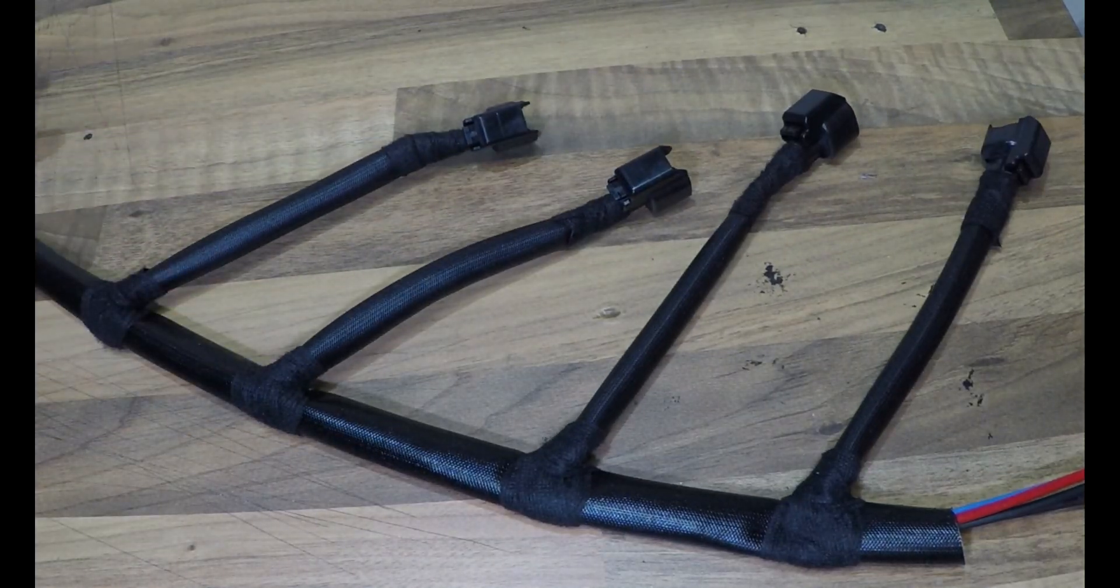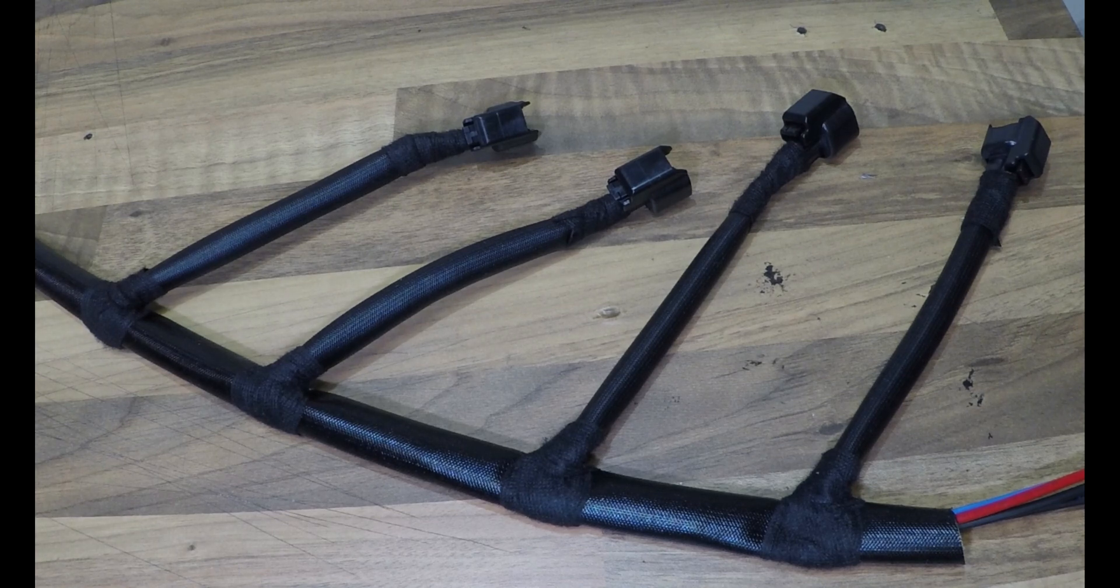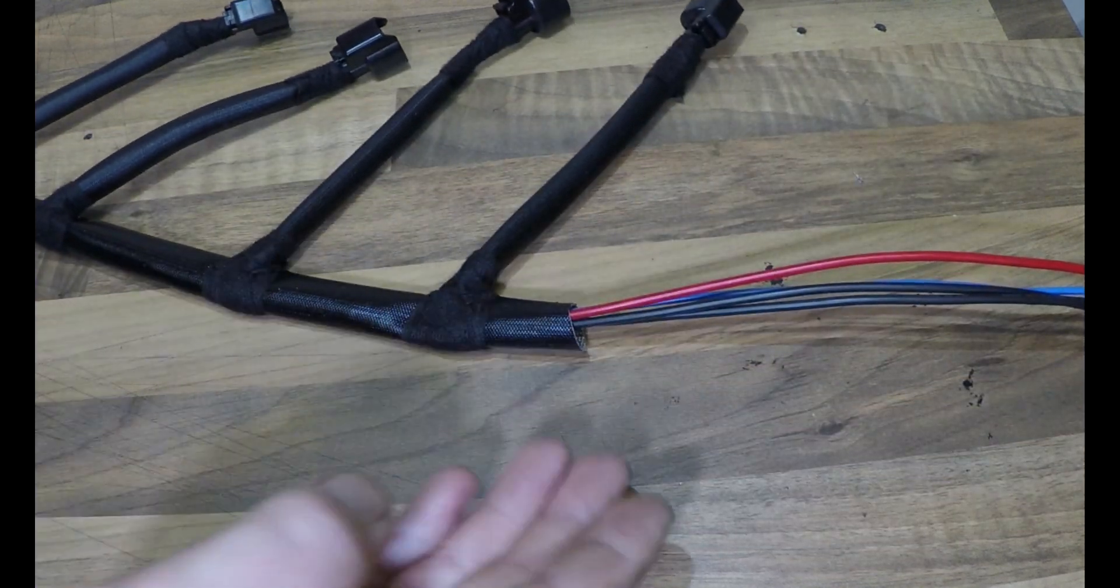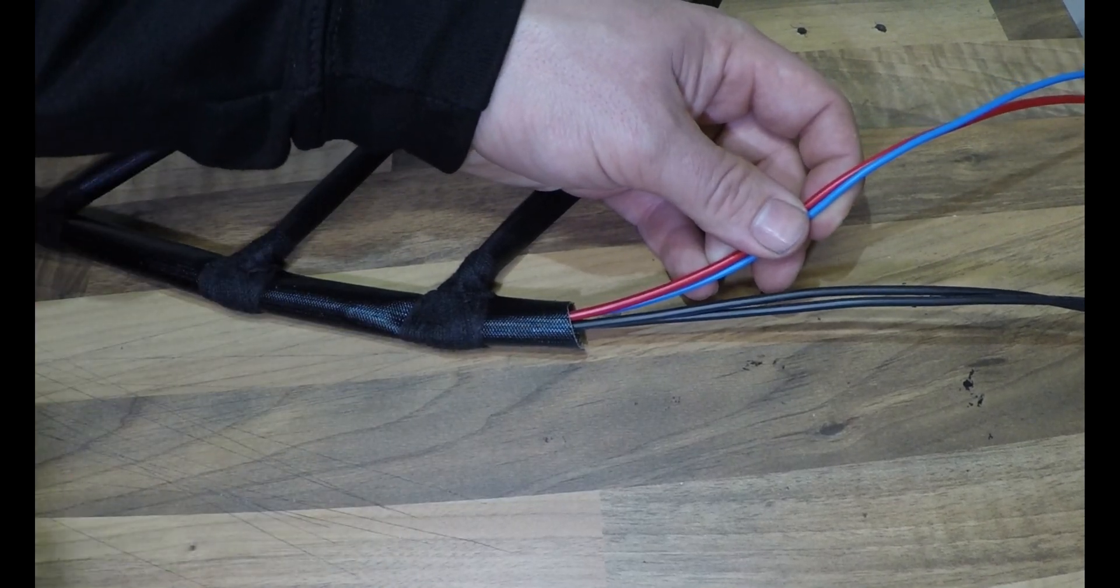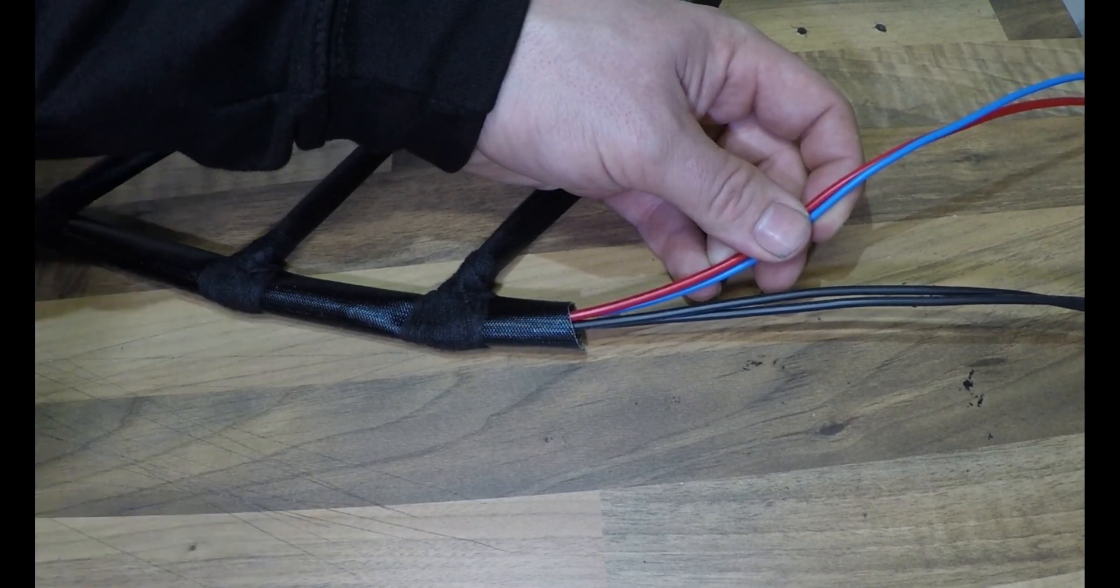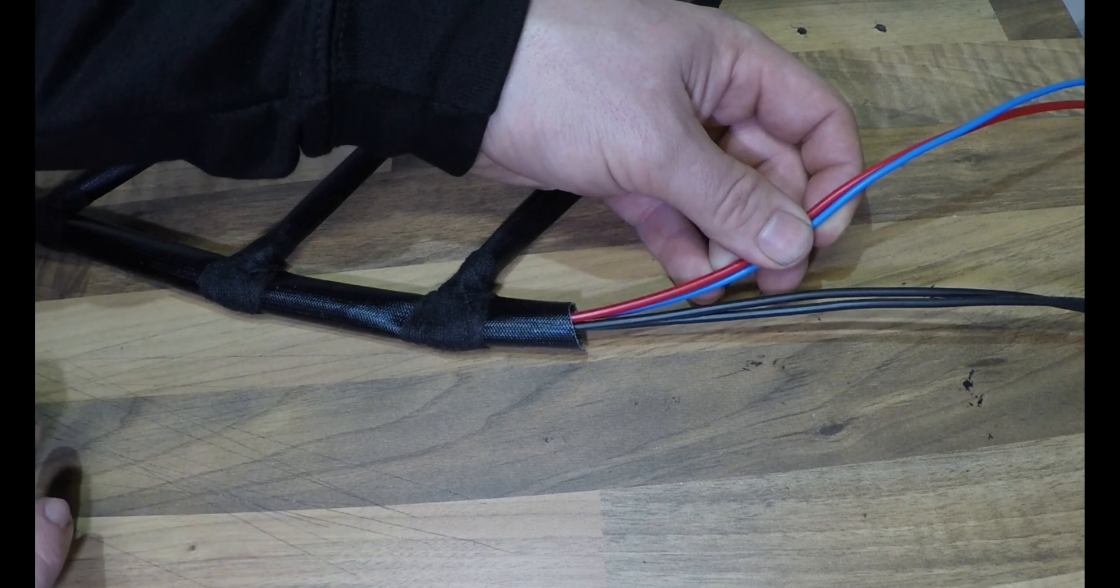That is the injector part of the loom almost done. You may be wondering what the extra wires are for. Well, the red and the blue are going to go to a plug which I'm going to do in a second, but I'll tell you what that's going to do soon enough.